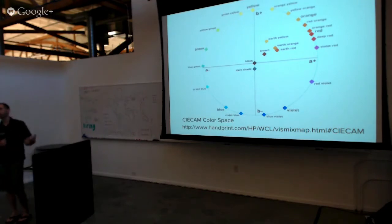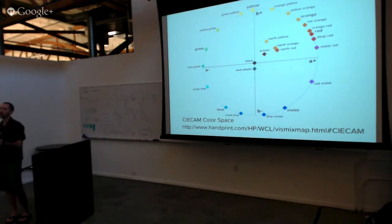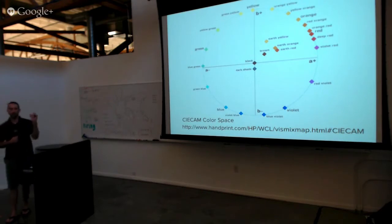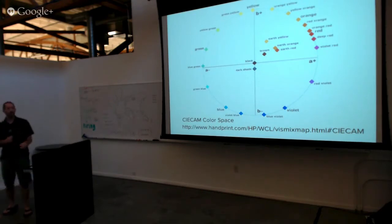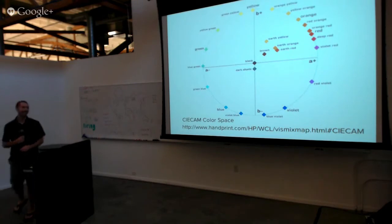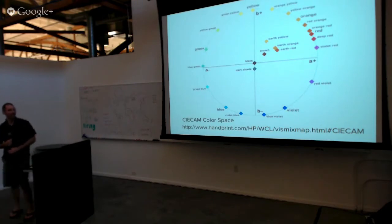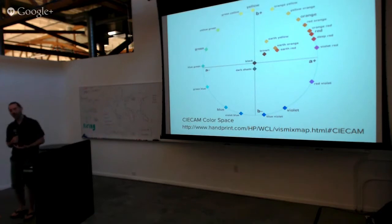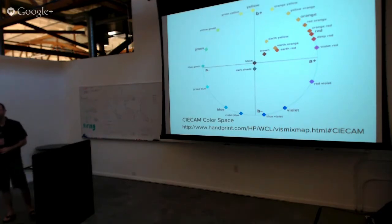We've also got things like the Pantone color guide. That's really great — if you're a print designer, that's in your back pocket all the time. You've got to have one of those swatch books. They say you've got to buy it every year, and it's a couple hundred bucks. But people care about that when they're printing 10,000 of them.